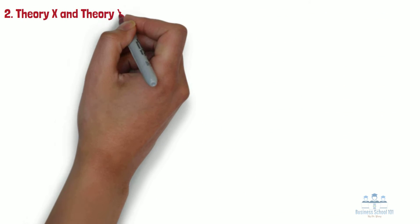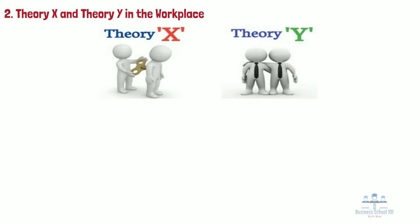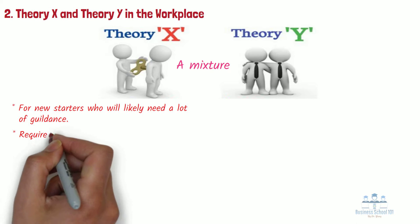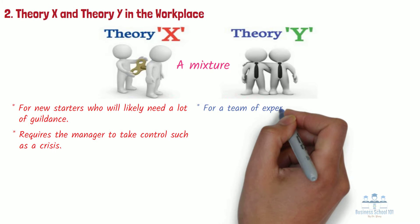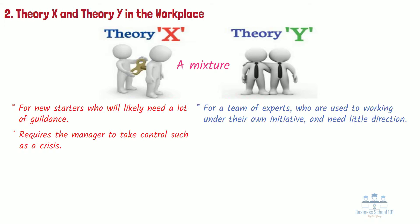Section 2: Theory X and Theory Y in the Workplace. Although both styles of management can motivate people, the success of each will largely depend on your team's needs and your organizational objectives. Therefore, in the workplace, most managers will likely use a mixture of Theory X and Theory Y. For example, a manager may use a Theory X style of management for new starters who will likely need a lot of guidance, or in a situation that requires the manager to take control, such as a crisis. But a manager wouldn't use it when managing a team of experts who are used to working under their own initiative and need little direction. If that manager did, it would likely have a demotivating effect and may even damage the relationship.